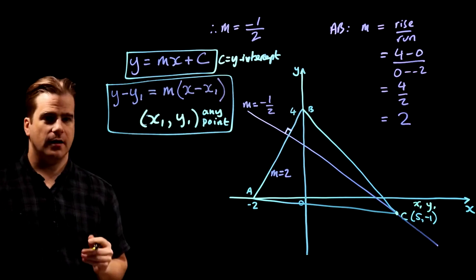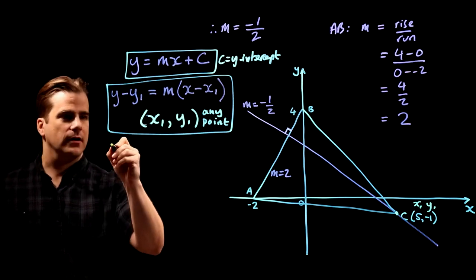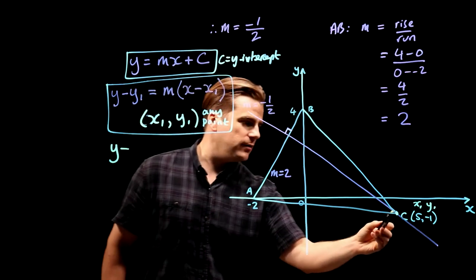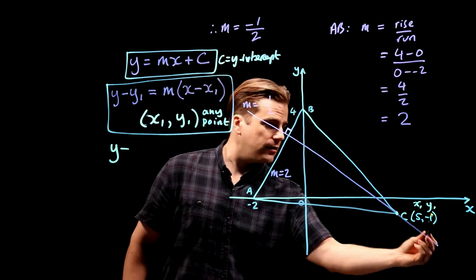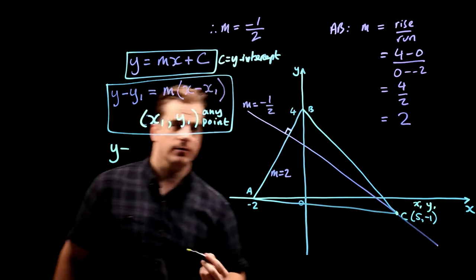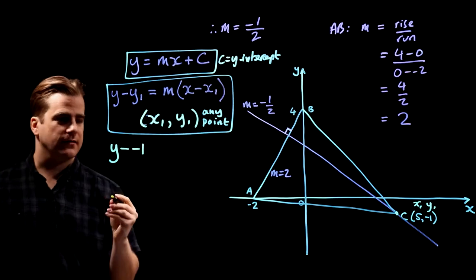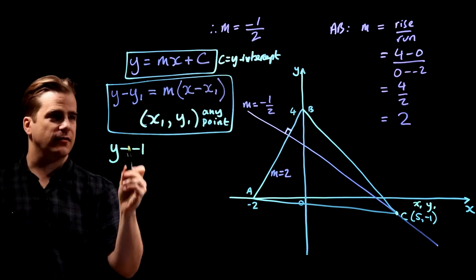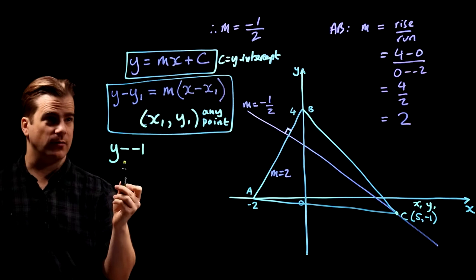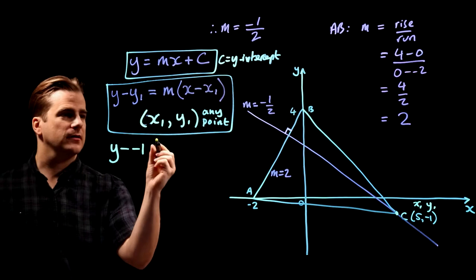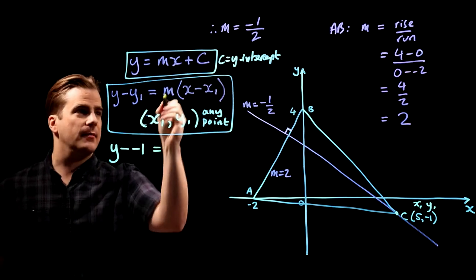So let's just stick in the numbers and the answer falls out. Y minus our y1—this is our any point on the line, and our y1 is minus 1. So it's y minus and then another minus. Don't make that mistake of thinking one minus is enough. There's two minuses here, that one and that one.